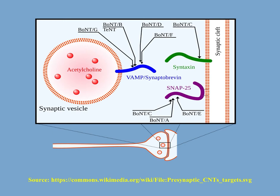There are seven types of botox, named from A to G. They all work by the same mechanism; however, the exact details of how they work vary slightly, and this is what is shown in this picture.